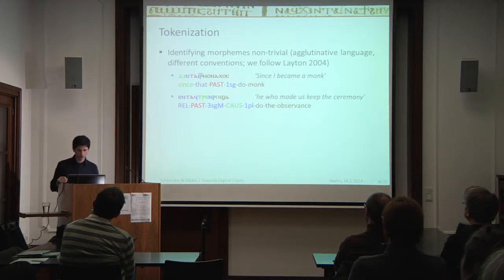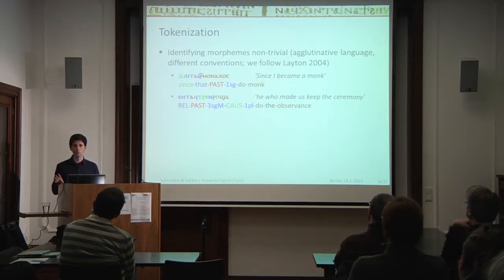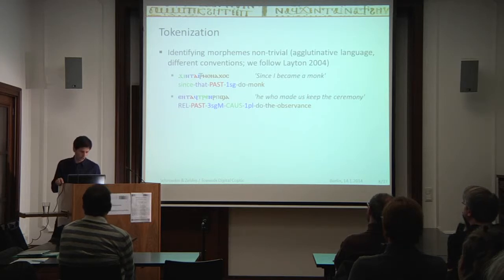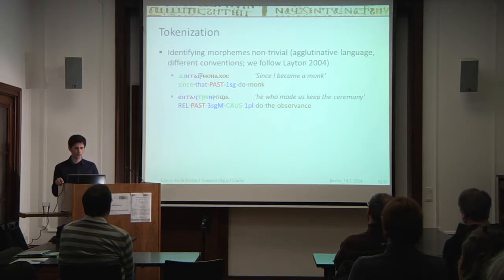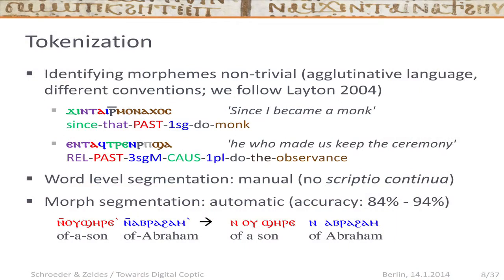Then you need to segment the data. Coptic is more or less a good example of an agglutinative language, or one well on its way to becoming fully agglutinative. It has complex word forms with different conventions on what constitutes a word form — we more or less follow Layton's grammar. For example, 'jintai rmonachos' means 'since I became a monk,' and is a conglomerate of morphemes meaning 'since,' 'that,' a past marker, a first-person singular marker, and a complex verb meaning 'do monk.' The reason you need to segment these is that if you're looking for the word 'monk' later, you won't find it unless it's been cut out of its surrounding context.